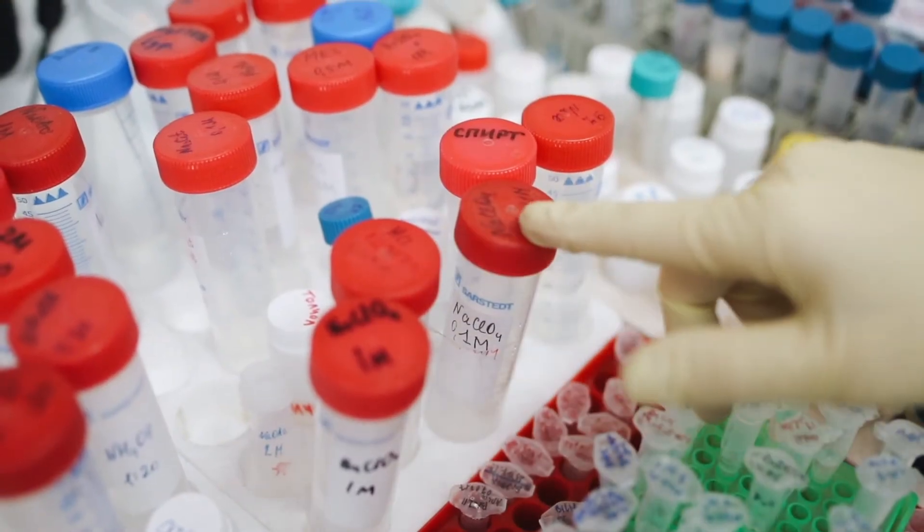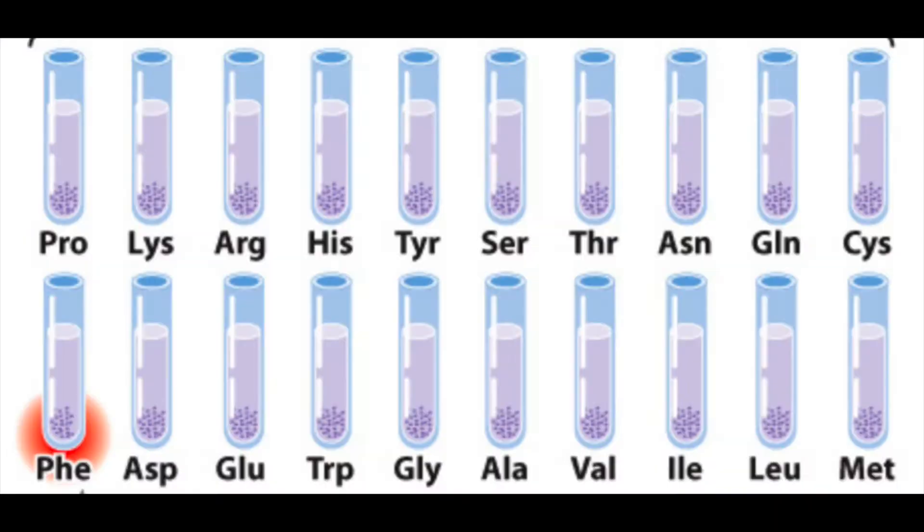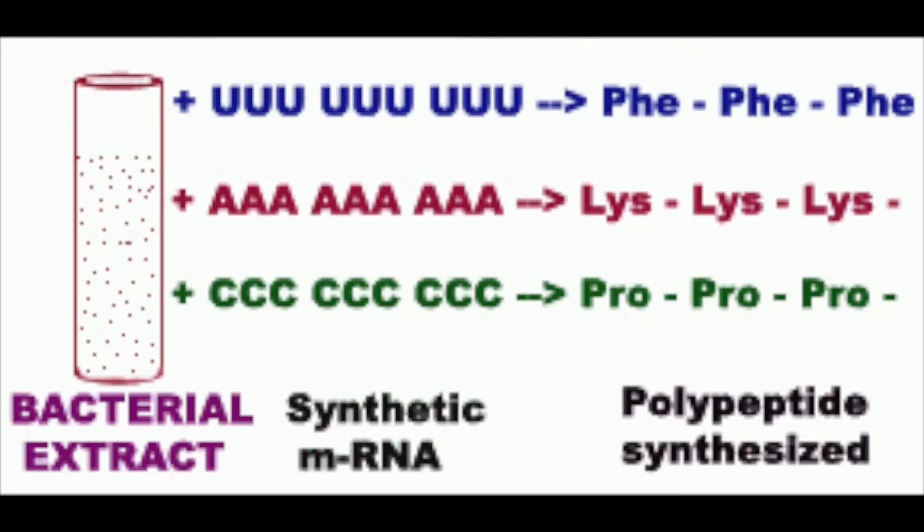These poly-U RNAs were then added to 20 test tubes, each containing components necessary for translation and all 20 amino acids. A different radioactively labeled amino acid was in each tube. Phenylalanine was the only tube that contained radioactive protein, which showed that the codon UUU encodes for that specific amino acid.